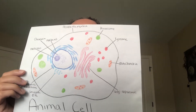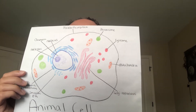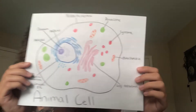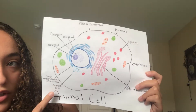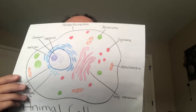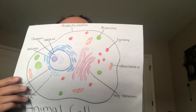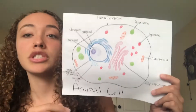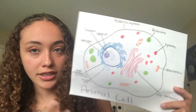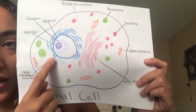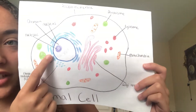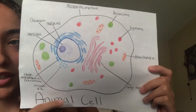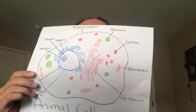The orange things are the mitochondria, which is the powerhouse of the cell because they produce ATP, which is the energy that a cell needs. These are the rough endoplasmic reticulum, which produces proteins for the rest of the cell to function.